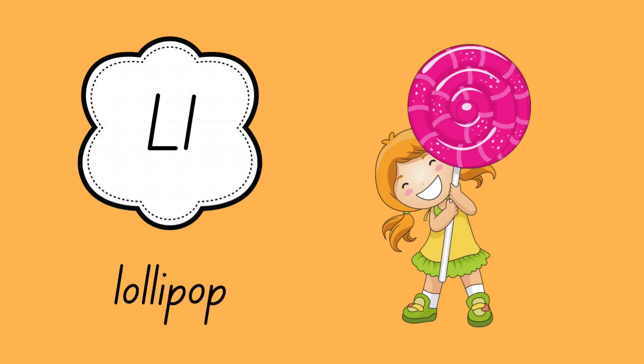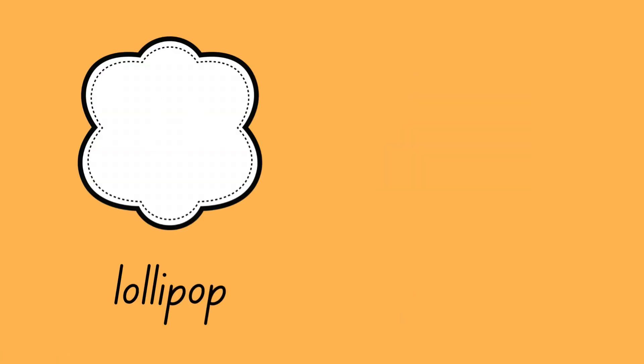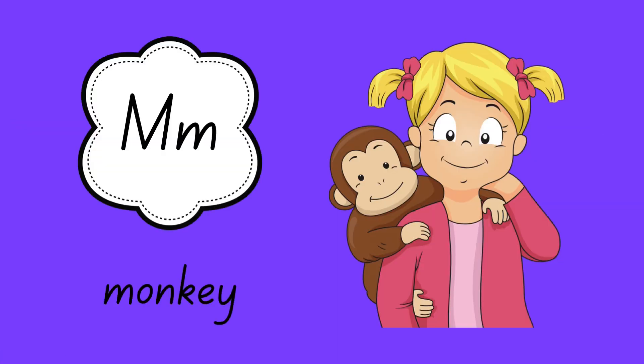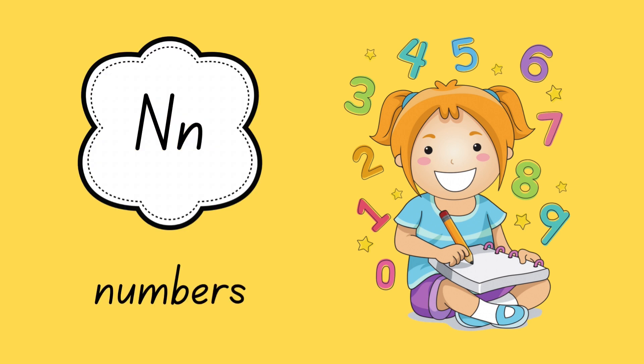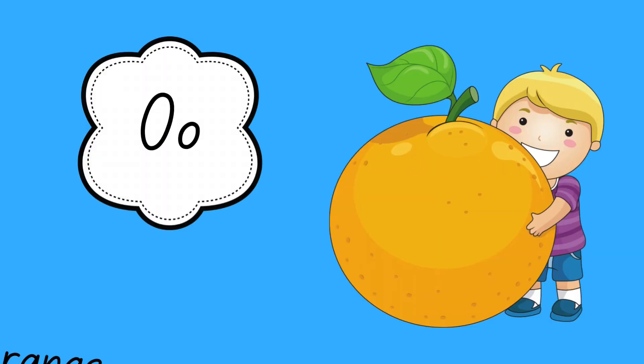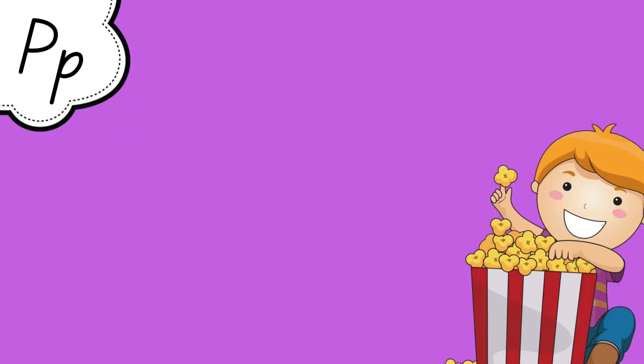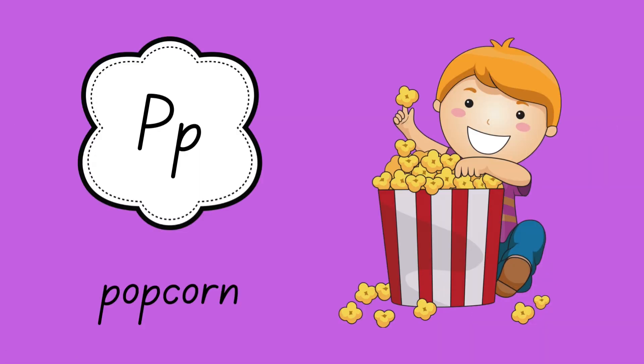L is for lollipop. M is for monkey. N is for numbers. O is for orange. P is for popcorn.